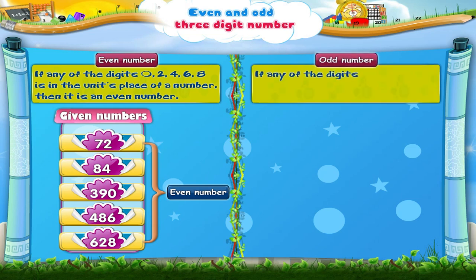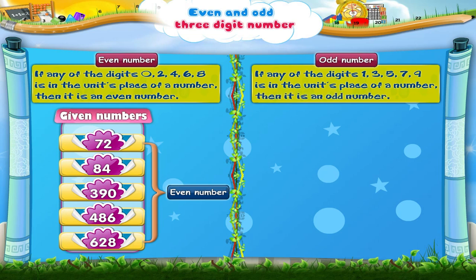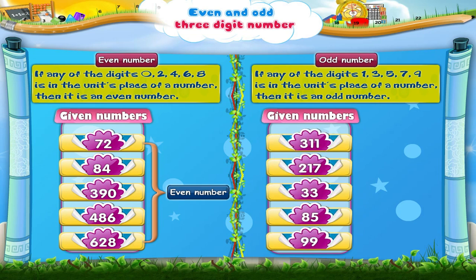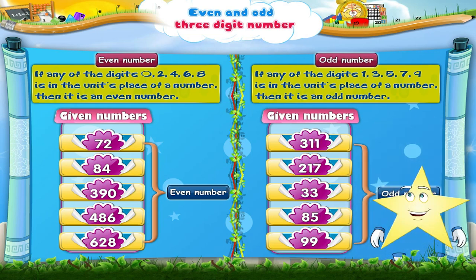Now, if any of the digits 1, 3, 5, 7, 9 is in the unit's place of a number, then it is an odd number. Look at the unit's place of these numbers. Each number has either 1, 3, 5, 7, or 9 in the unit's place. So, these numbers are odd numbers. Starry, isn't it interesting?